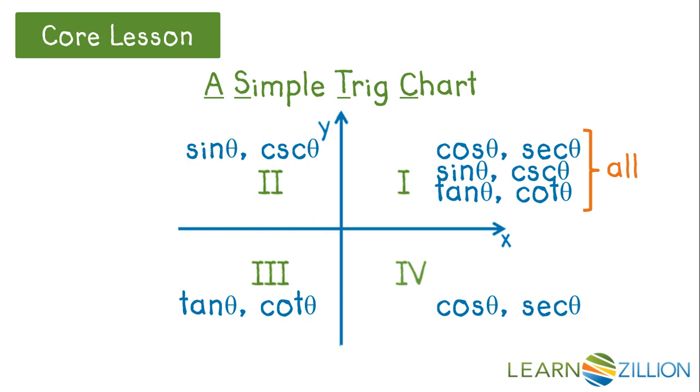What's the easy way to remember all of this? A simple trig chart. The first letters of these words remind us which functions are positive in each quadrant. All, sine, tangent, and cosine.